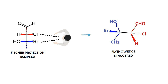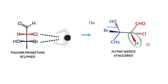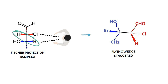In a nutshell, one must remember that when converting a Fischer projection into staggered flying wedge representation, the groups on the same side in the Fischer projection end up on opposite sides in the flying wedge projection. The same applies when converting a flying wedge into Fischer projection — the groups on the same side in the staggered flying wedge projection end up on opposite sides in the Fischer projection.